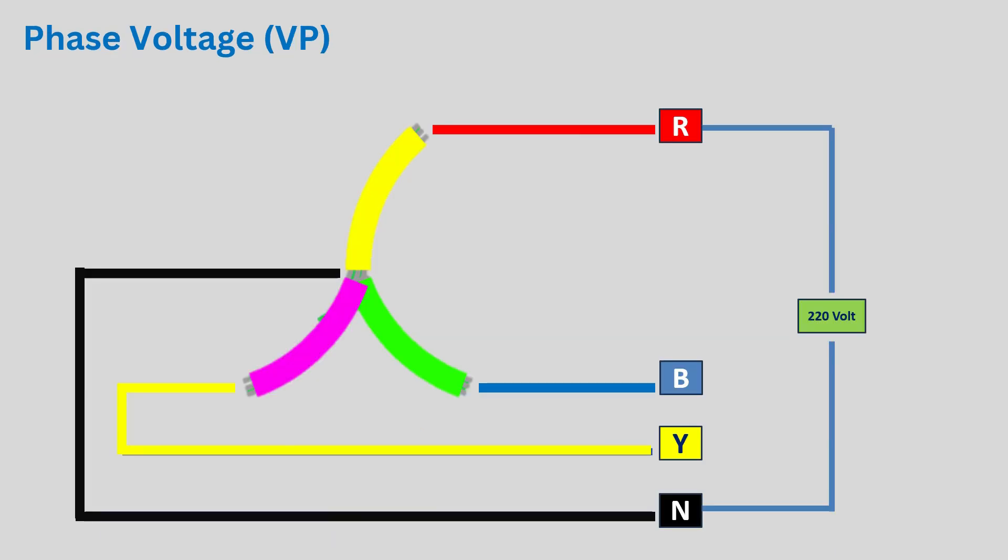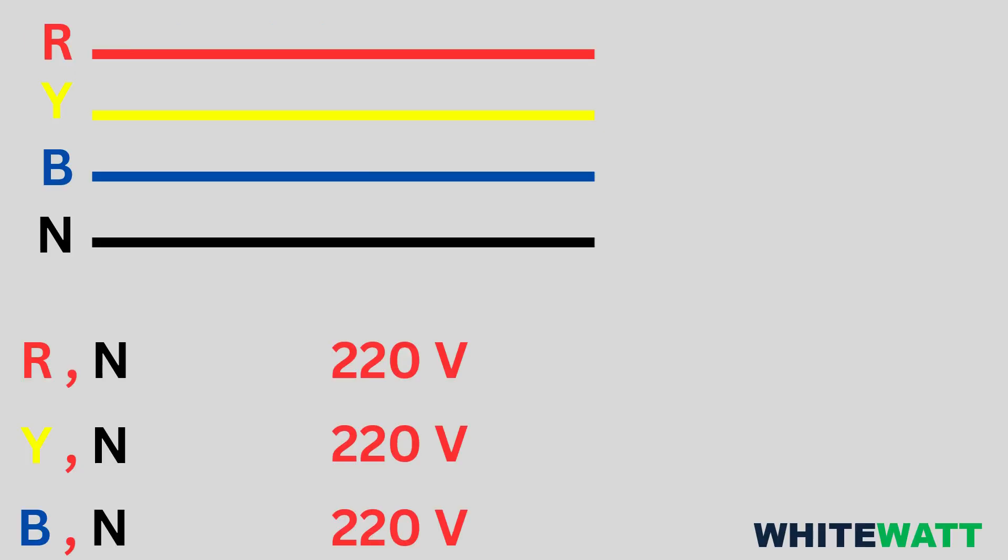Now phase voltage. Phase voltage is the voltage measured between a phase and the neutral point in a three-phase system. It is measured between one line phase and neutral, for example red and neutral, yellow and neutral, blue and neutral.